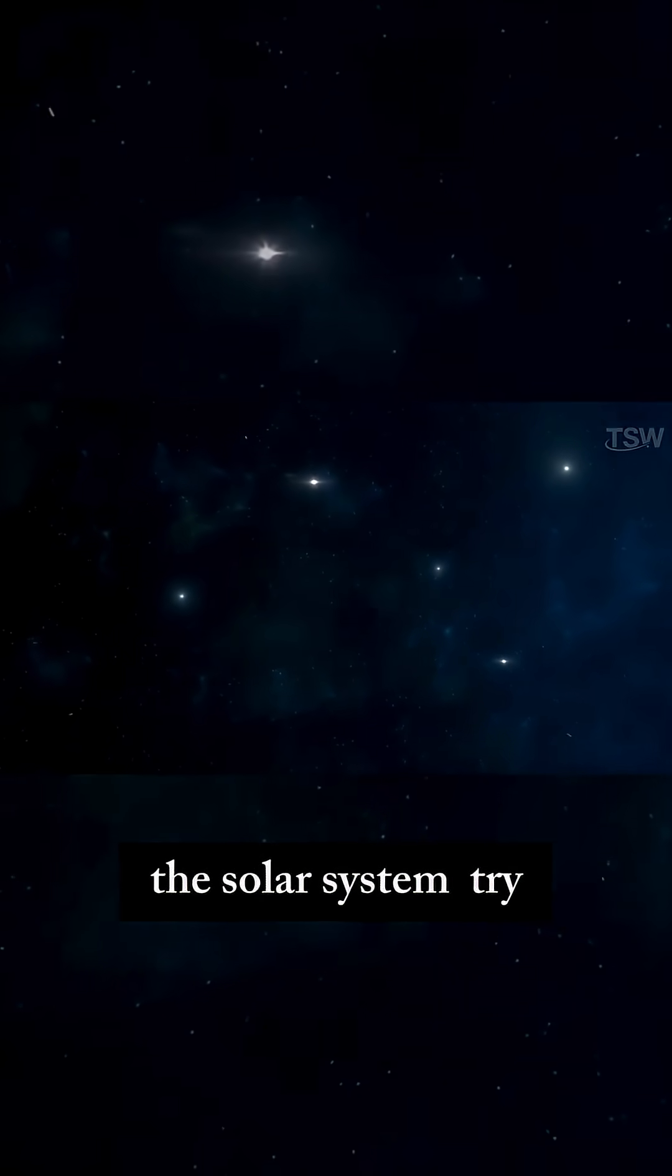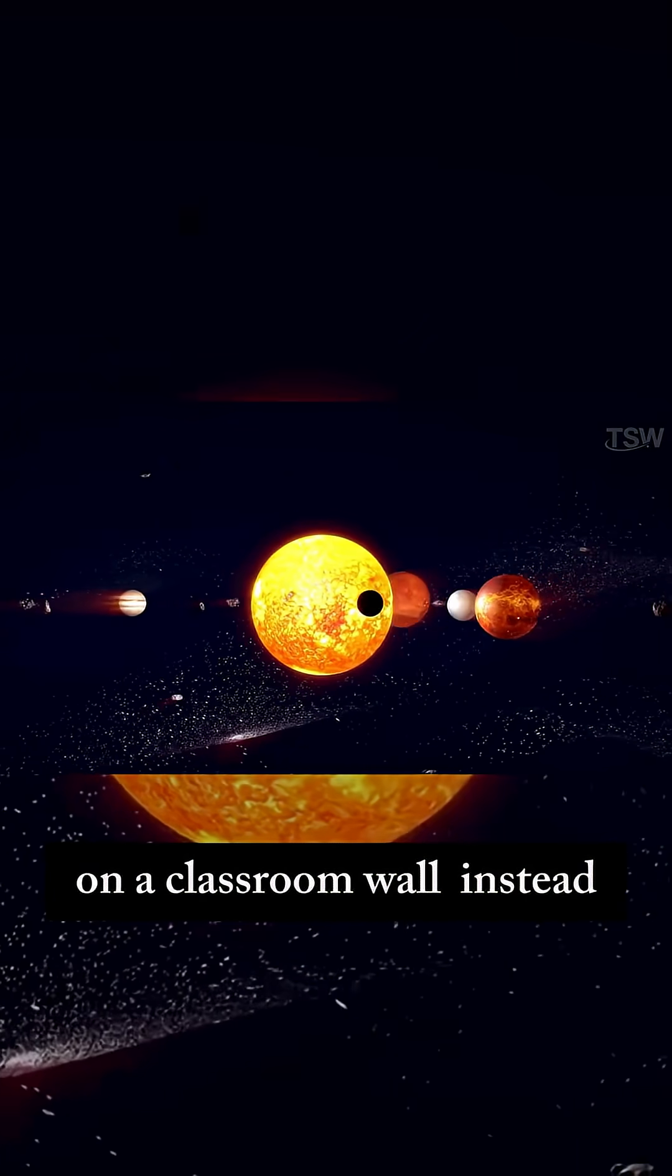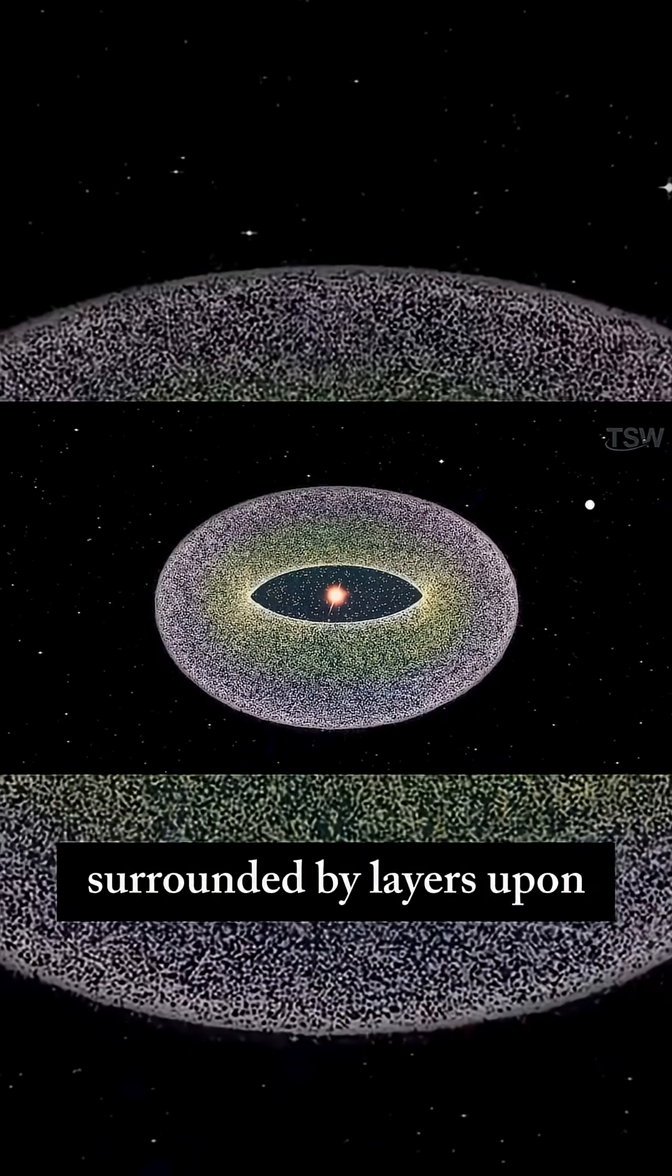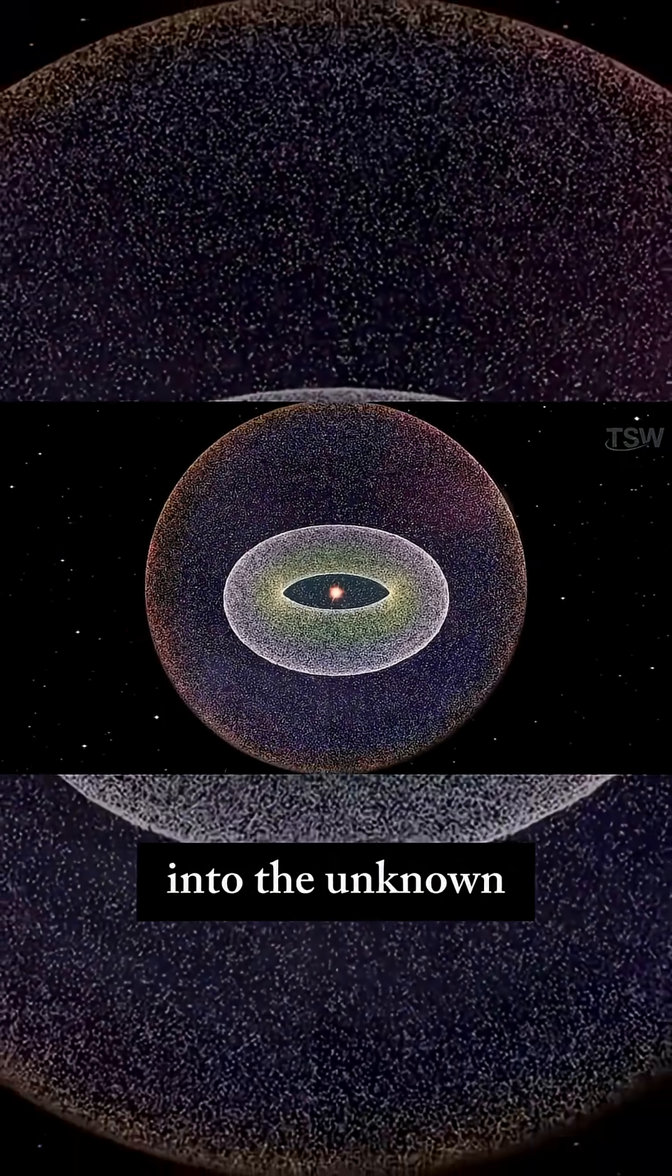So, next time you picture the solar system, try not to see it as a flat chart on a classroom wall. Instead, imagine it as a living, moving structure, surrounded by layers upon layers of cosmic material stretching upward and downward into the unknown.